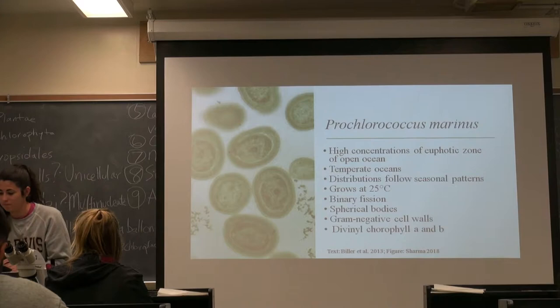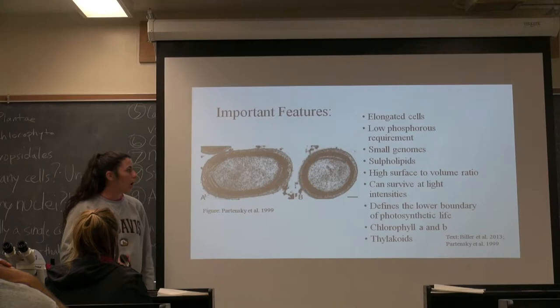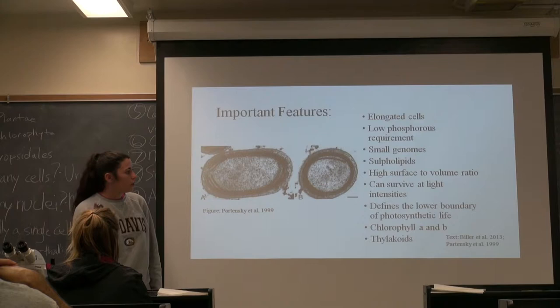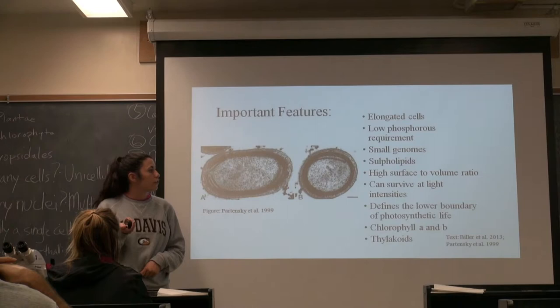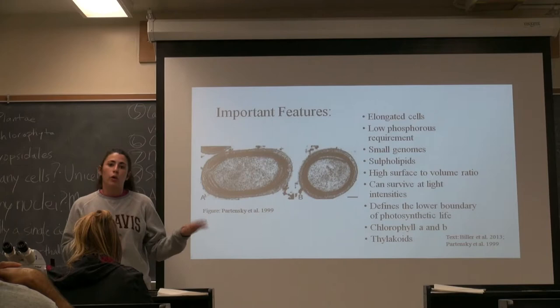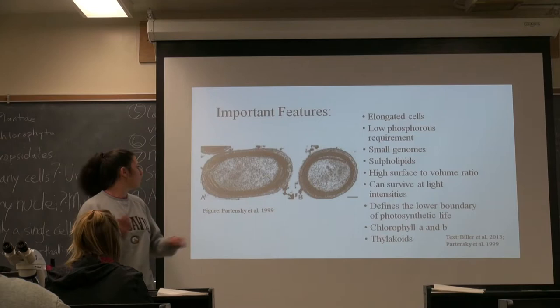So important features: they have elongated cells — this is the elongated picture of the cell, and then this is the cross section. They have low phosphorus requirements, they have small genomes, as well as they substitute phospholipids for sulfolipids because of their low requirement for phosphorus. They have high surface-to-volume ratios, and can survive in a lot of different realms of light, from lower light intensities to higher light intensities. They define the lower boundaries of photosynthetic life, and as I said before, they have chlorophyll A and B and thylakoids, which is in the membrane here.